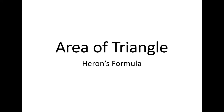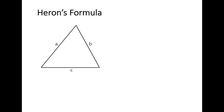In this video we're going to look at how to calculate the area of a triangle using Heron's formula when we only know the three sides of the triangle and no other information. Heron's formula is used when we know the three sides — side A, side B, and side C. We don't have any angles, we don't know the height of the triangle. In this case we can use Heron's formula to calculate the area of that triangle.